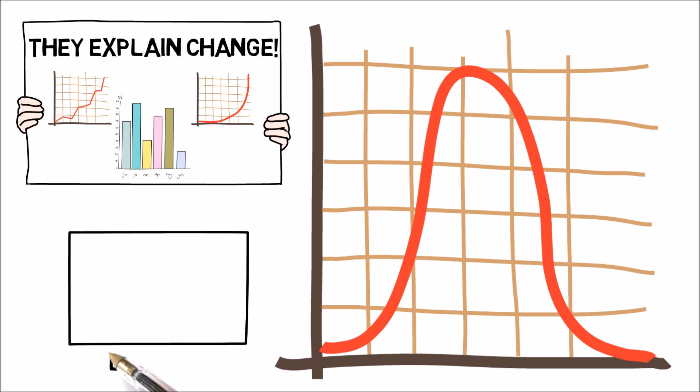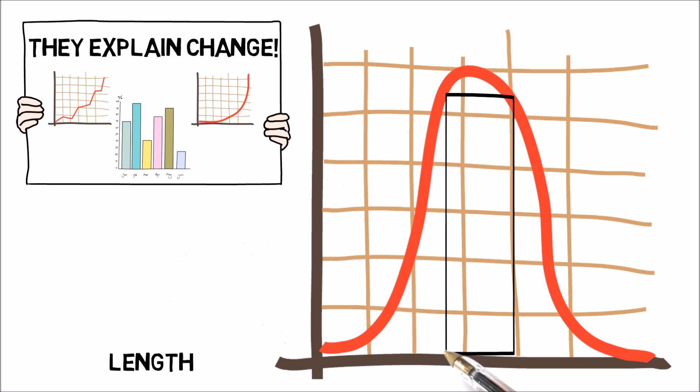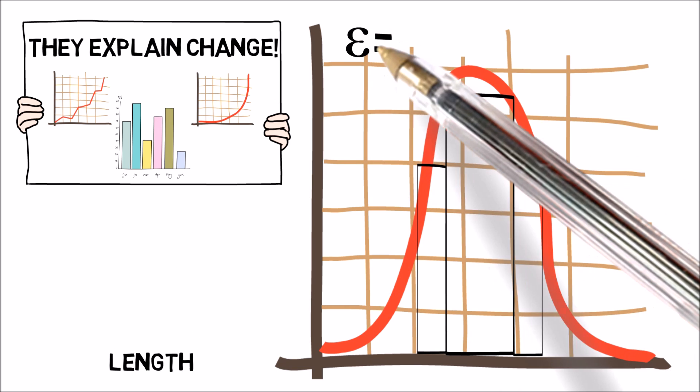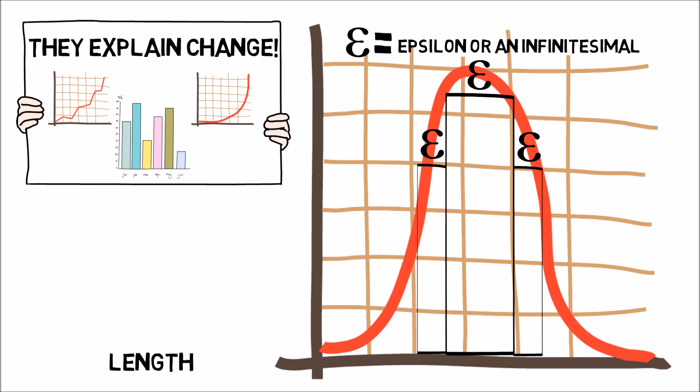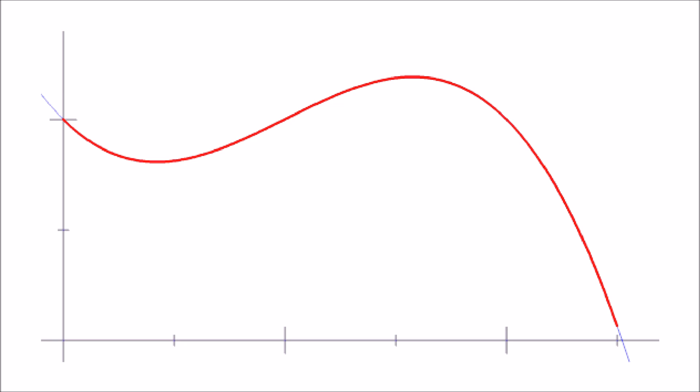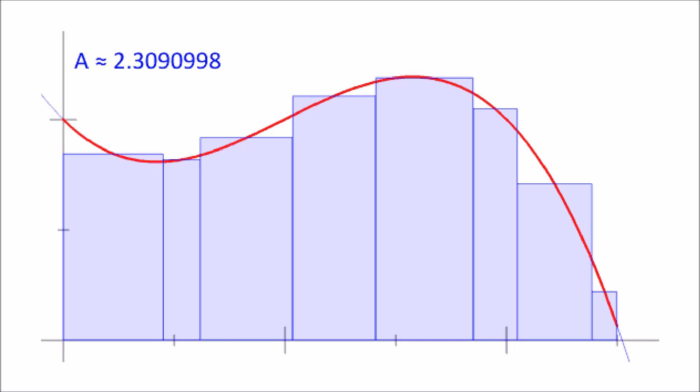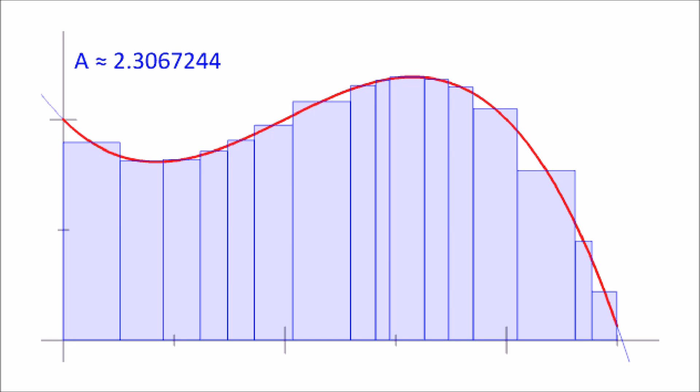First, let's take something I know the area of, like a rectangle, and then fit an infinite amount of rectangles with infinitesimal widths inside this curve. All we have to do is add up the areas of the rectangles, and since they make up the entirety of the curve, we now have the area of the curve. This is half of calculus, and infinitesimals make it simple.